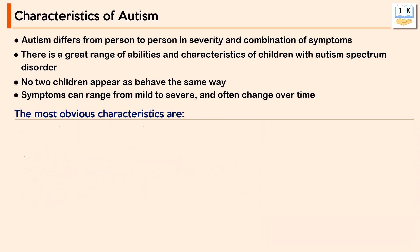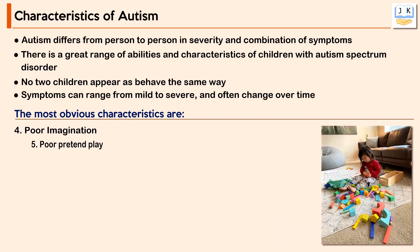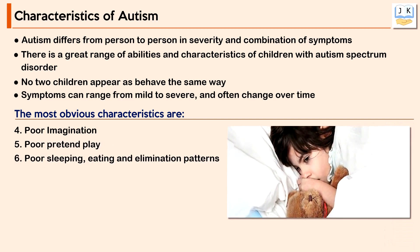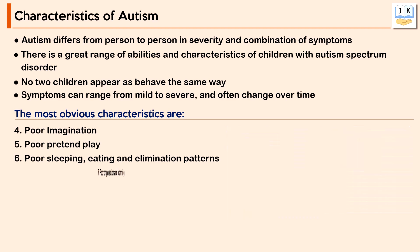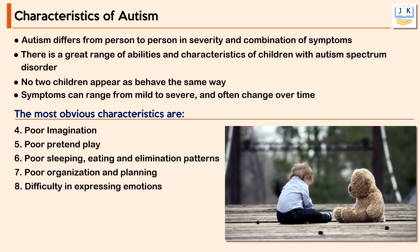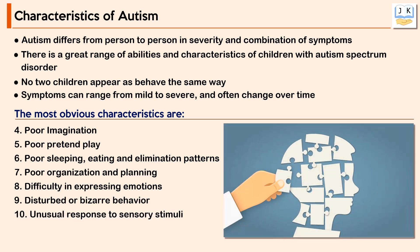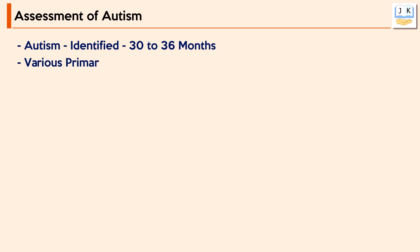Other characteristics of autism include poor imagination, poor pretend play, poor sleeping, eating and elimination patterns, poor organization and planning, difficulty in expressing emotions, disturbed behavior, and unusual responses to sensory stimuli.